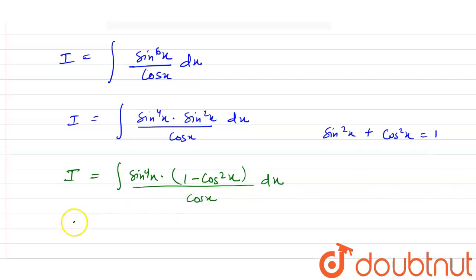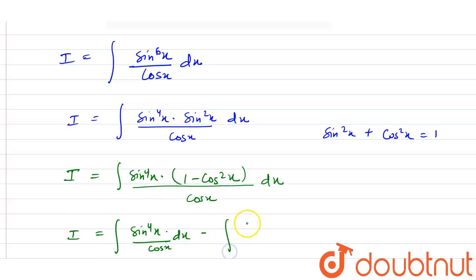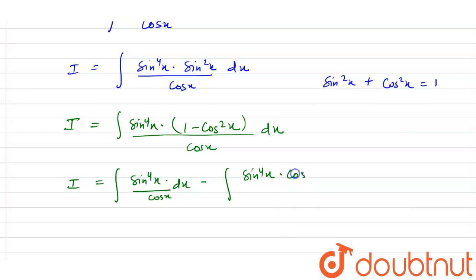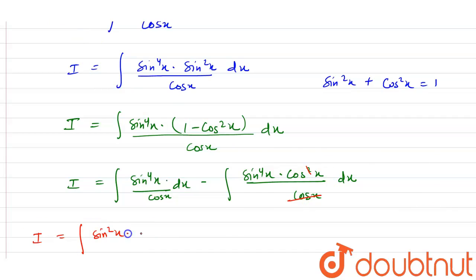Now I equals the integral of sin⁴x divided by cos x dx, minus the integral of sin⁴x times cos²x divided by cos x dx. Here the cos x terms cancel each other, so I equals the integral of sin²x times sin²x times cos x divided by cos x dx.